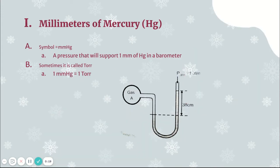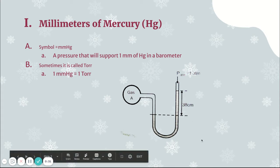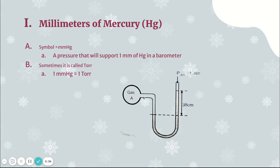Millimeters of mercury is sort of the first one that was developed — the first way we measured atmospheric pressure. A barometer was used, which you can kind of see here. This is technically a manometer, but basically you have some gas with a known pressure, and then you measure the millimeters of distance that the mercury travels to compare. That's why the symbol is millimeters of mercury — you're actually measuring the distance.